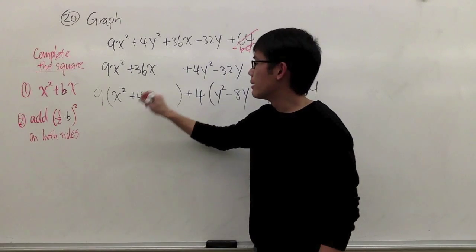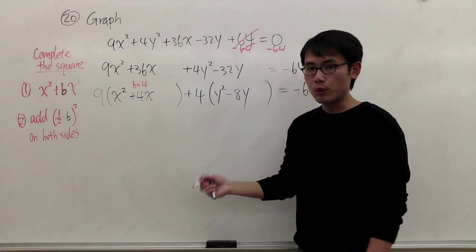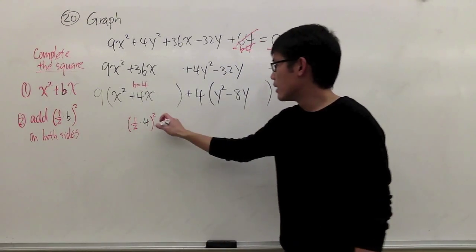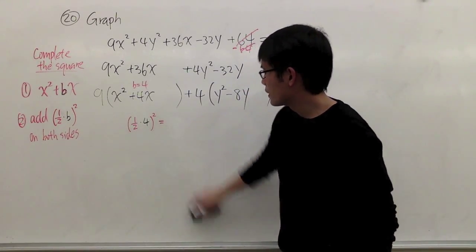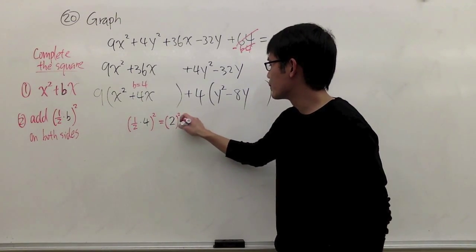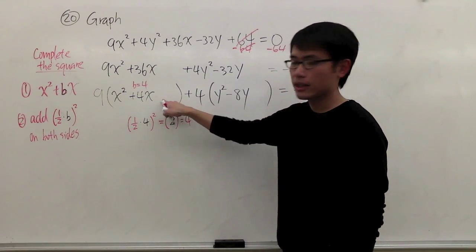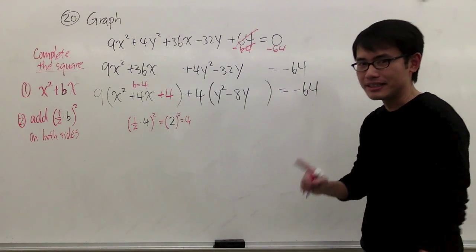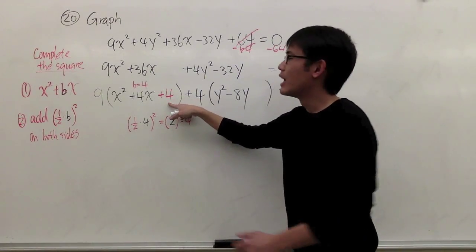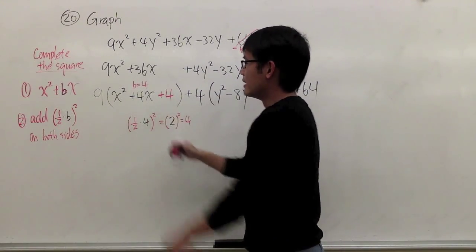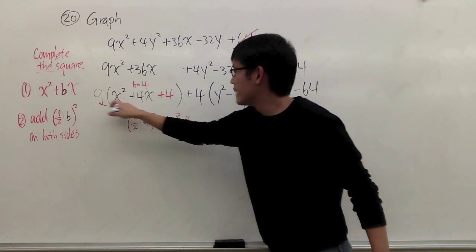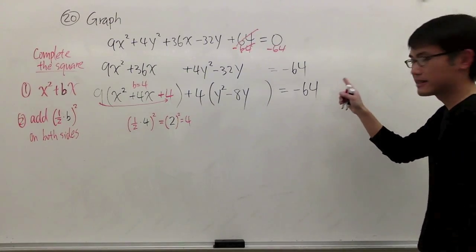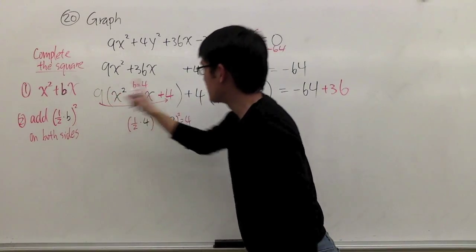Paying attention to the x parentheses, my b value is positive 4. The number I need to add is one-half times 4, squared — which is 2 squared, equal to positive 4. So I add plus 4 inside the parentheses. However, you have to be really careful: I added a 4 inside the parentheses, but there is a 9 outside, so 9 times 4 is 36. We are going to add 36 on the right-hand side as well to balance the equation.